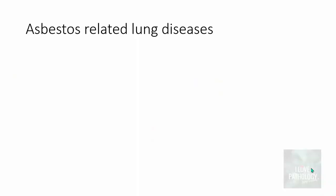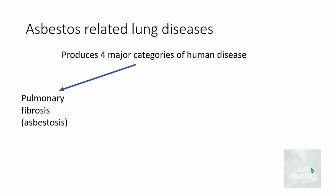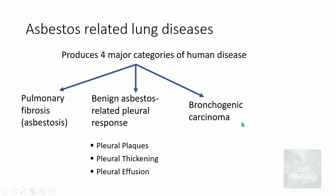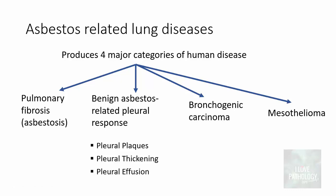The spectrum of asbestos-related lung diseases produces four major categories of human disease. First is pulmonary fibrosis, referred to as asbestosis. Second is pleural involvement, which includes benign asbestos-related pleural responses such as pleural plaques, pleural thickening, and pleural effusion. Third, it can result in bronchogenic carcinoma. Finally, it can result in pleural malignancy, that is mesothelioma.